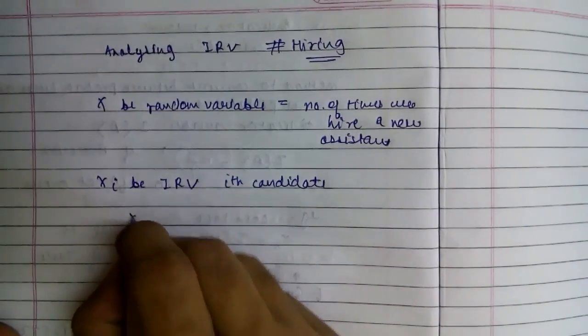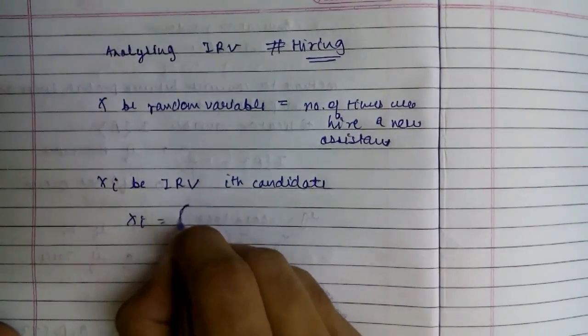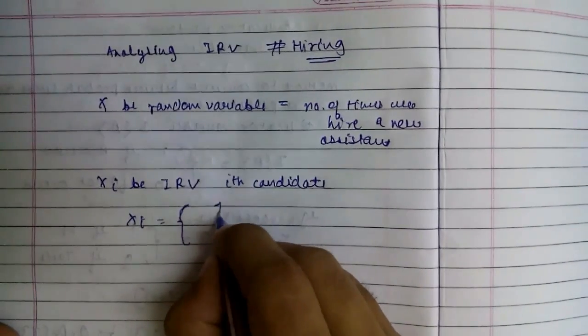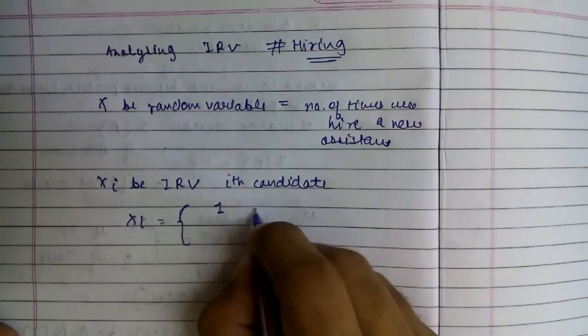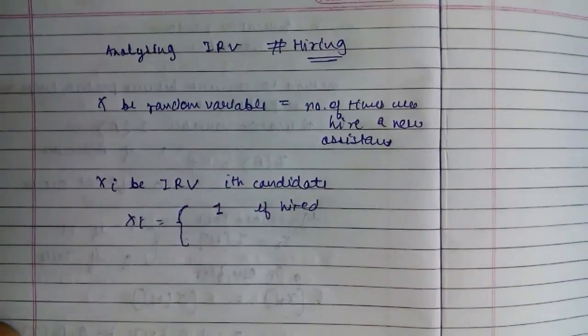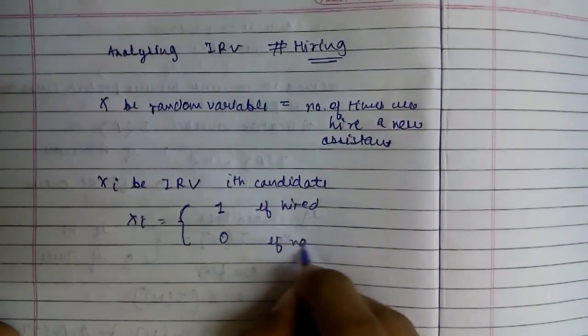So its value can be, as like in coin toss head or tail, similar here 1 if hired, if the candidate i is hired, and 0 if not hired.